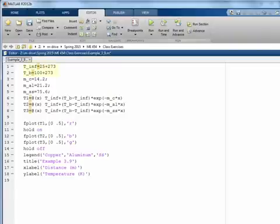In order to define this problem in MATLAB, we simply enter the two different temperatures for the infinite and for the base, the three different values of m for copper, for aluminum, and for stainless steel. And we define the temperatures as a function of x using anonymous functions.